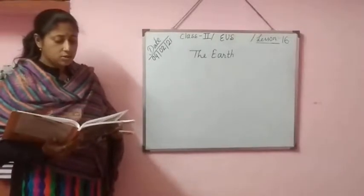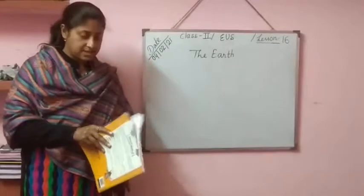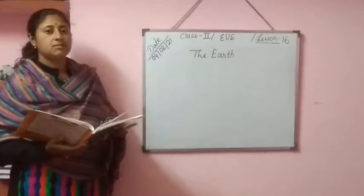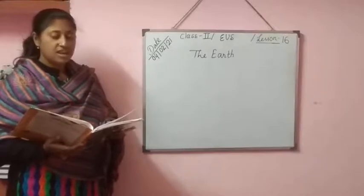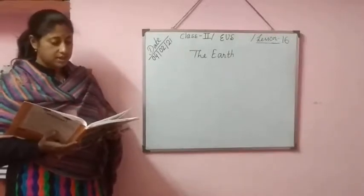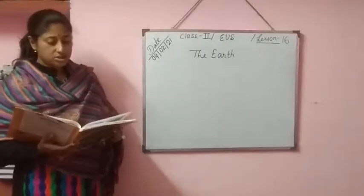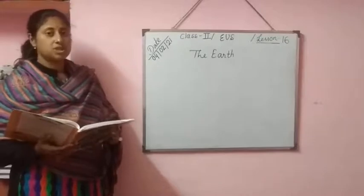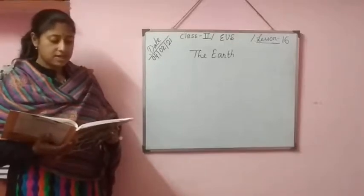Seas are also large salt water bodies like oceans, but smaller than oceans. A sea meets land on one side and oceans on the other side.